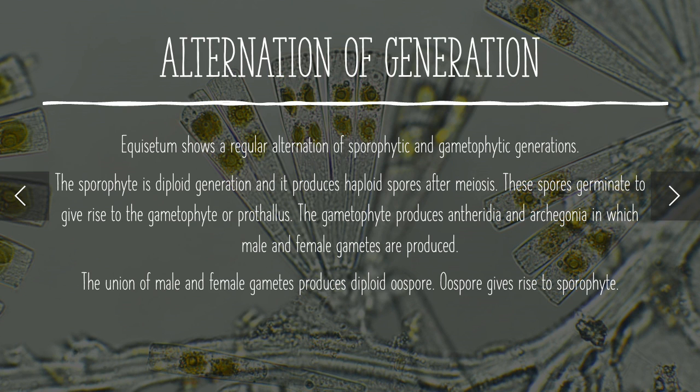Alternation of generations is a process in which the haploid generation has the ability to produce the diploid generation, and the diploid generation again produces the haploid generation. The sporophytic generation produces the gametophytic generation, and the gametophytic generation produces the sporophytic generation. By this process, both generations alternate with each other.